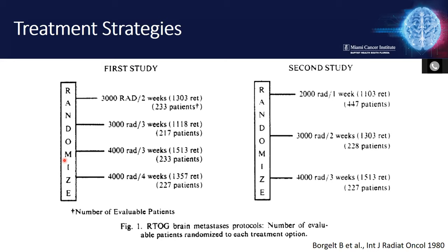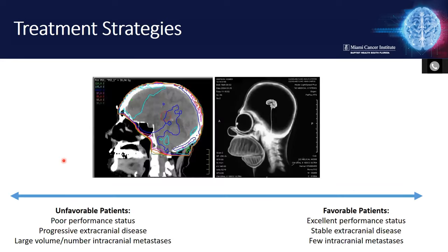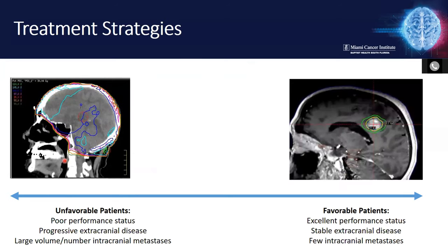In the modern era, trials are very complicated — sequencing systemic therapy with stereotactic radiosurgery, radiosurgery with hippocampal-sparing whole brain, selecting patient populations at initial diagnosis or relapse. We moved away from standard whole brain radiation therapy without stratification because of the neurocognitive side effects. Today we'll focus specifically on stereotactic radiosurgery, which is used more commonly for favorable patients. Hippocampal avoidance whole brain radiation therapy is another option increasingly used at our facility.